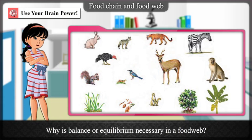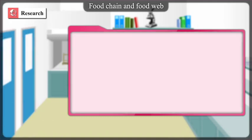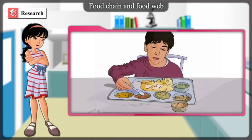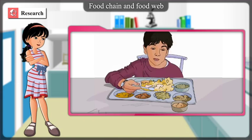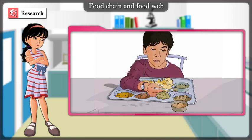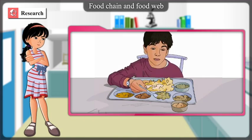Why is balance or equilibrium necessary in a food web? Make some interesting observations while having a meal at home. Identify the trophic level of the various food items in your dish, and identify your own level in the chain.